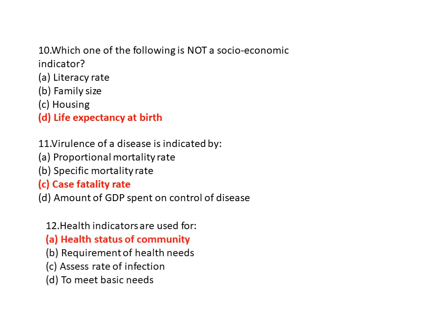Question 12: Health indicators are used for? Option A is health status of community, option B is requirement of health need, option C is attack rate of infection, and option D is to meet basic needs. So option A is the correct answer — health status of community.